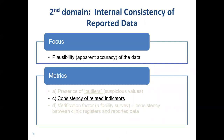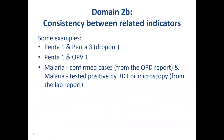The next type of internal consistency that we will be reviewing is consistency of related indicators. Here are some other examples of related indicators, in addition to looking at the dropout rate between PENTA-1 and PENTA-3. We could also compare the values of the first doses of PENTA to values of the first doses of OPV vaccine. Both of these are typically administered on the same visit, so we expect the values of these two indicators to be roughly the same.